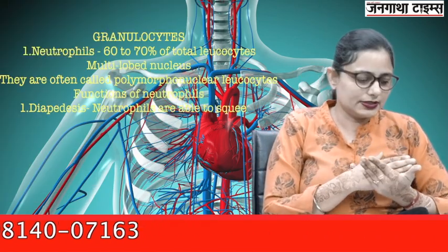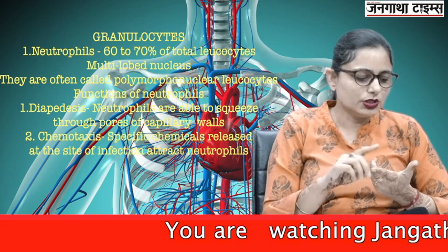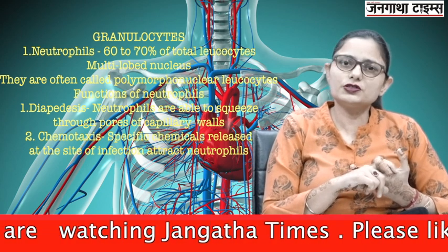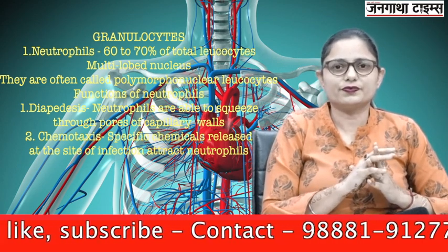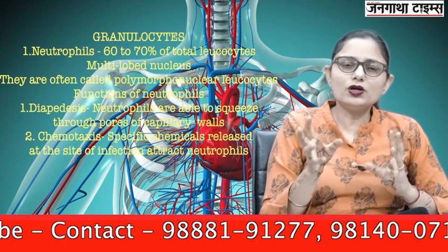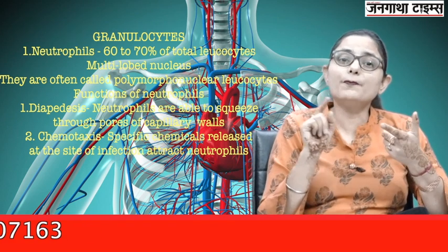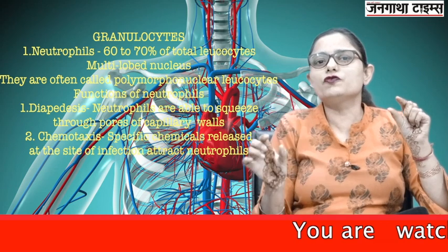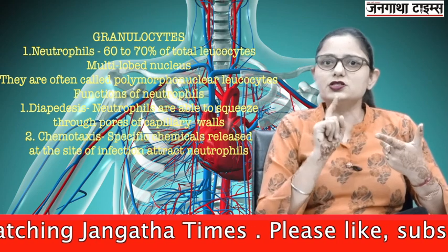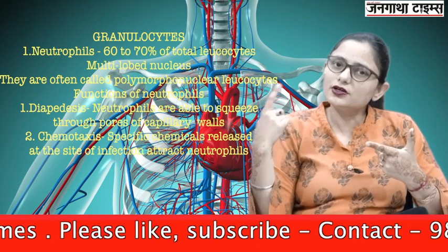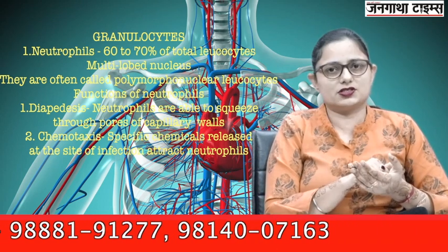The granulocytes are the most numerous of the WBCs. Of the three types — neutrophils, eosinophils, and basophils — neutrophils form about 60 to 70 percent of total leukocytes. Neutrophils have lots of granules in the cytoplasm and a multi-lobed nucleus, with different lobes joined by thin strands. Because of this multi-lobed nucleus, it is also called polymorphonuclear leukocyte.